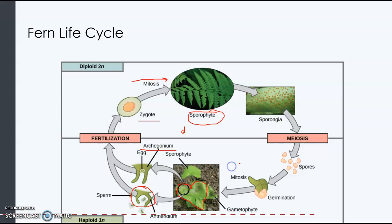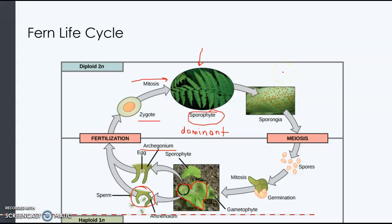Something that will probably help you remember this: the only group that has a dominant gametophyte generation are the seedless non-vascular plants — the mosses, liverworts, and hornworts. All other plants have a dominant sporophyte generation. So the plant that you think of when you say the word fern is going to be the sporophyte — that's the dominant generation for the fern.